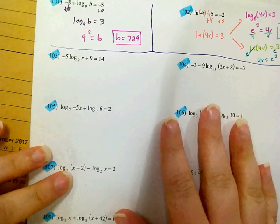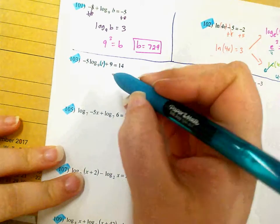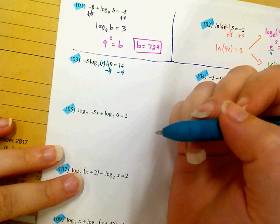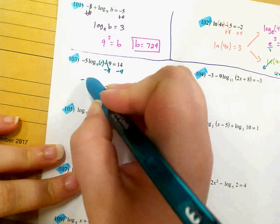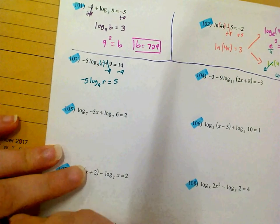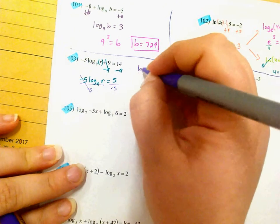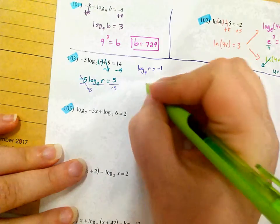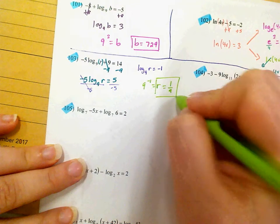On 103, I want to solve for the variable. First I'm going to subtract 9, and I'm left with negative 5 times log base 9 of r equals 5. Then I want to get rid of the negative 5 in the front, so I'm going to divide by negative 5, and I'm left with log base 9 of r equals negative 1. Any time I have a log equal to a number, I convert to an exponential: 9 to the negative 1 equals r, or 1 ninth. A negative power just moves it to the denominator.